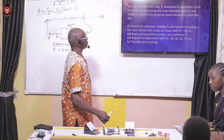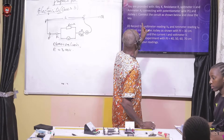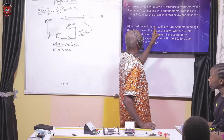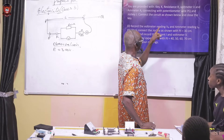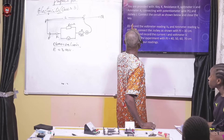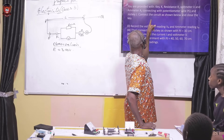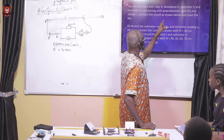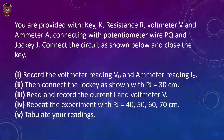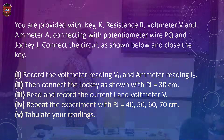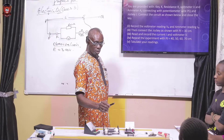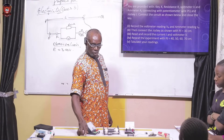Now looking at the whole setup, you are provided with a key, resistance, voltmeter, and ammeter — that's in summary — connecting with a potentiometer wire PQ and the jockey J. This is the jockey J. The jockey is used to determine the balance point of electricity at any point on the bare wire.